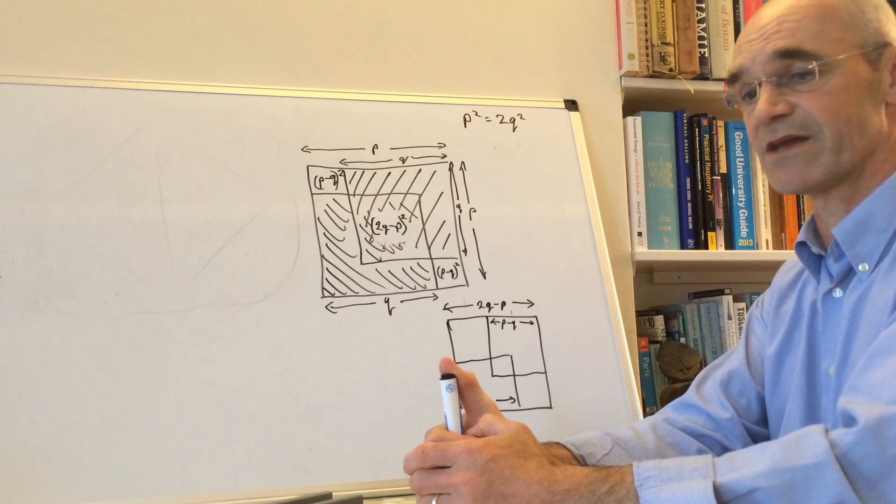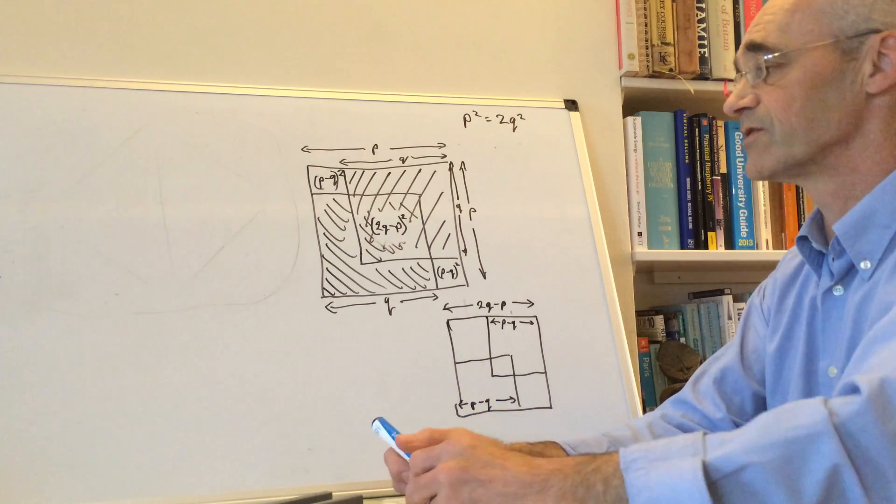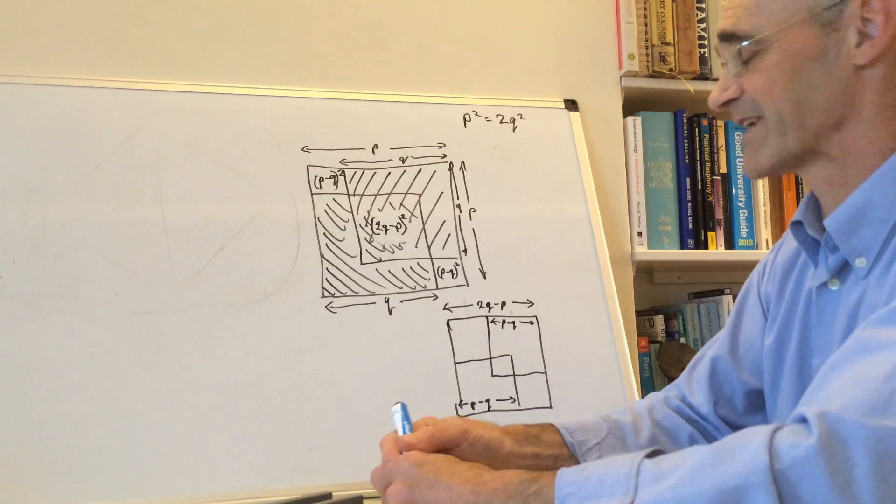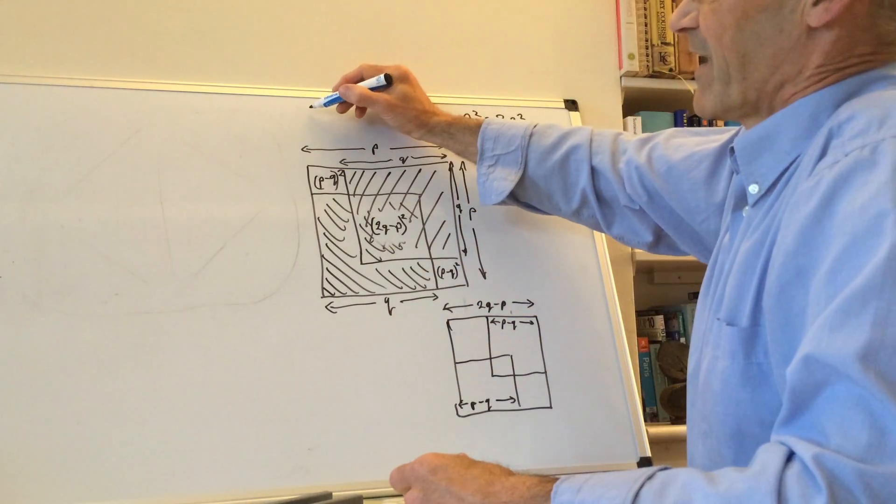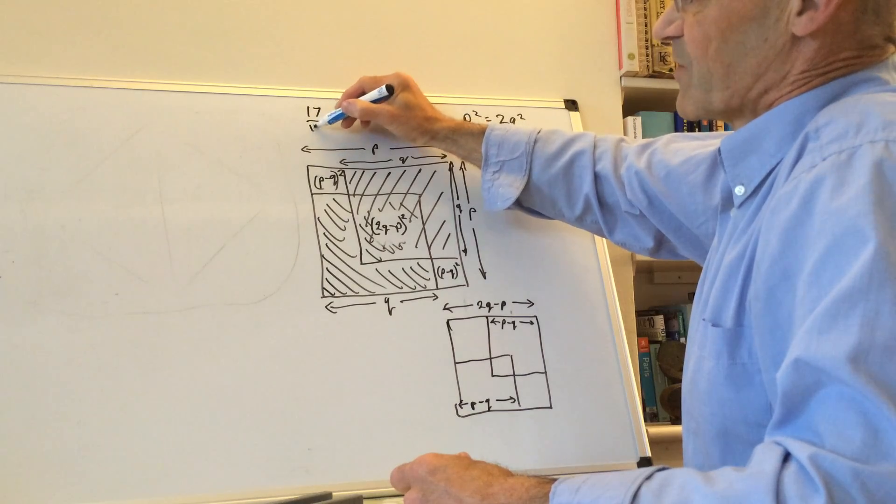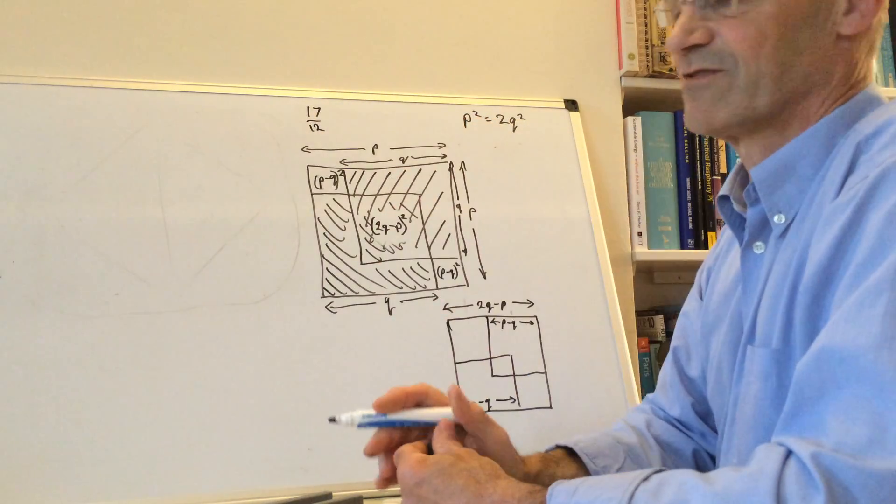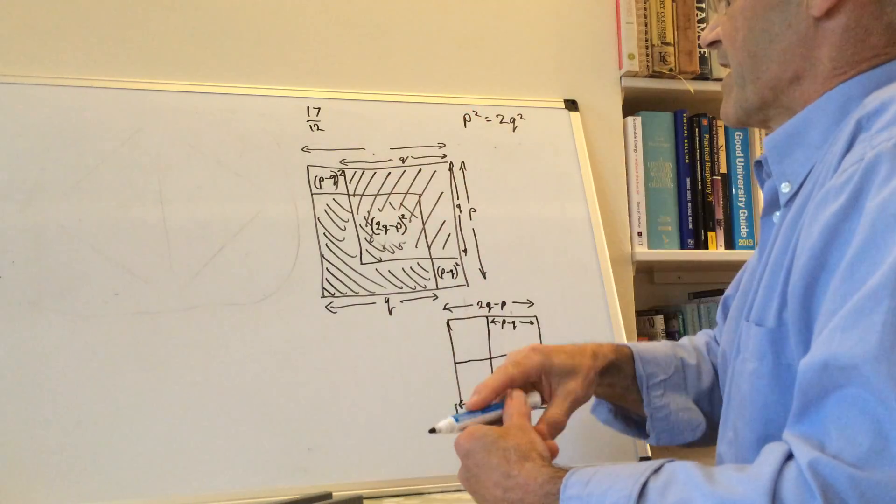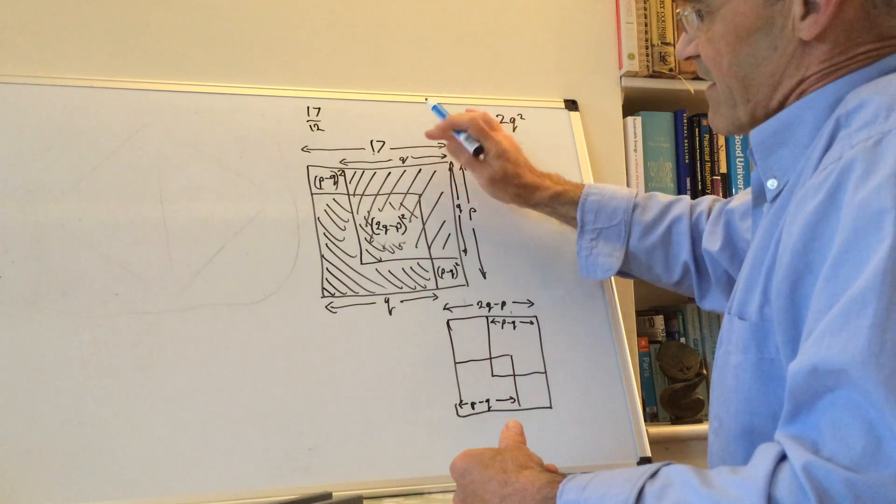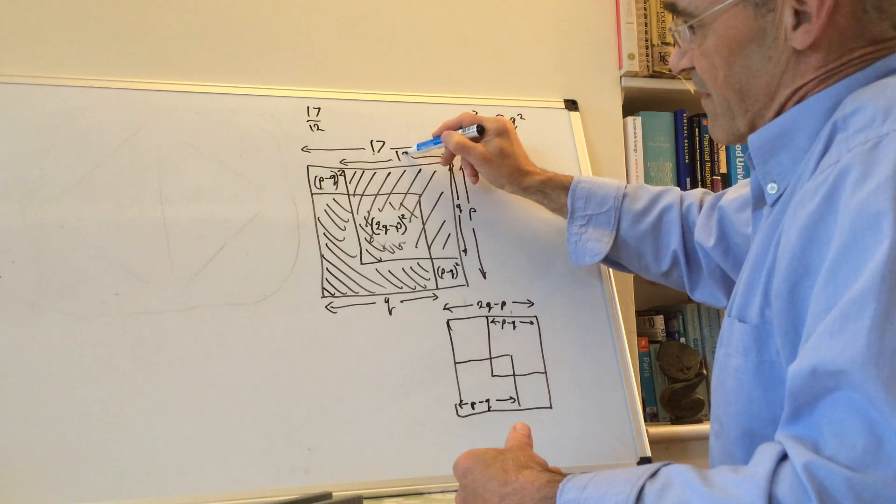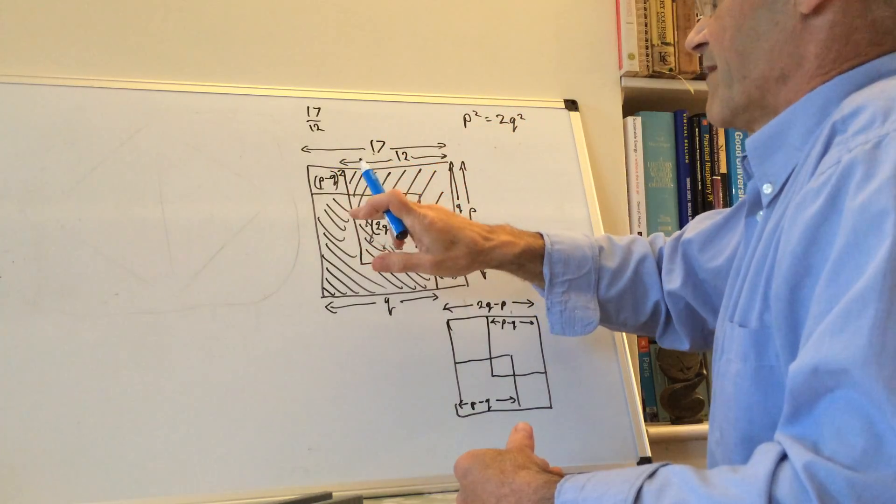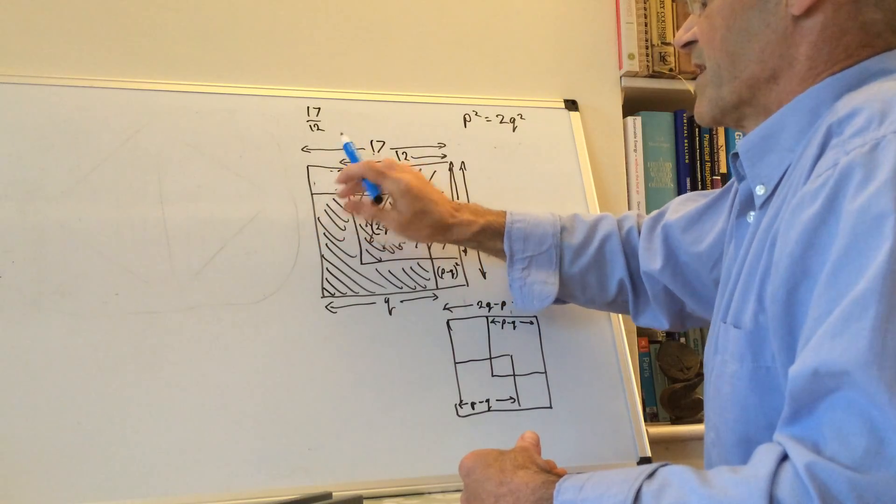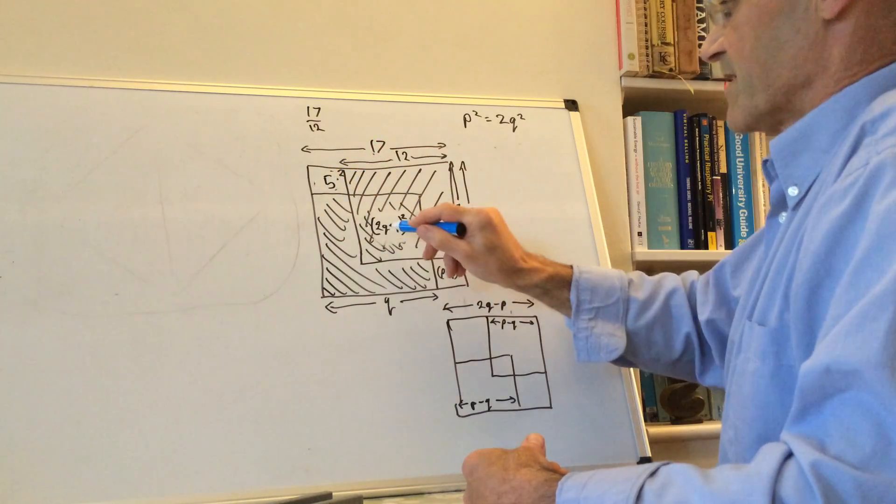Twice one is twice the other. And you could, if you're not convinced, actually work it through with actual examples. So you could take something like 17/12, which is quite a good approximation to √2. So you can actually put those values in here and say that's 17 and that's 12.